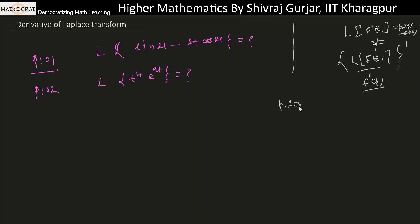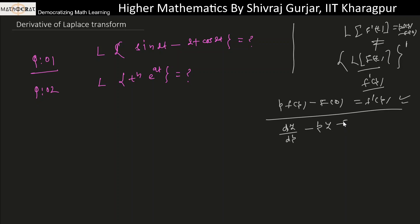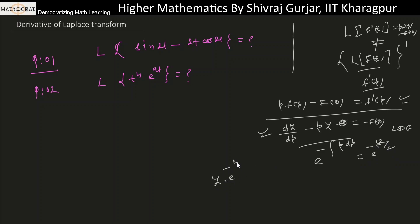If we equate these two: p·F(p) minus f(0) equals F-dash(p), this becomes a differential equation. Taking F(p) as y, this becomes dy/dp minus p·y equals minus f(0). This is a linear differential equation and can be solved using an integrating factor: e to the power minus p-squared over 2. So y times e^(−p²/2) equals the integral of minus f(0) times e^(−p²/2) dp.